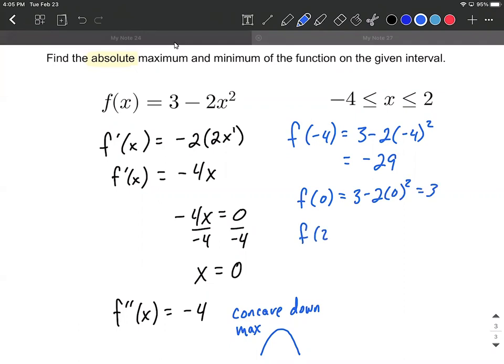And f(2), the right endpoint for our interval, 3 minus 2 times 2², 3 minus 8 is going to be -5. In comparing each one of these, you'll notice that 3 is the largest value. So this is going to be the absolute maximum occurring at 0.